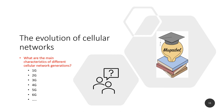Let me leave you with a question about the evolution of wireless networks. What are the main characteristics of different cellular network generations — first, second, third, fourth, fifth, and sixth generation? Please write in the comments what you think the main differences are, and if you can guess about future generations that would be great. We'll see you in coming videos with more about cellular systems and hexagonal cells. Thank you.